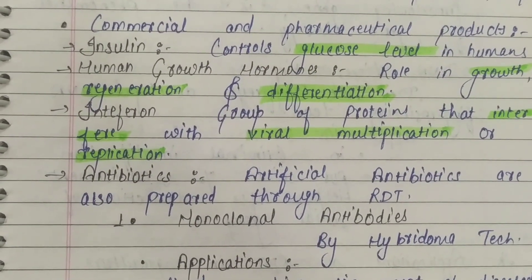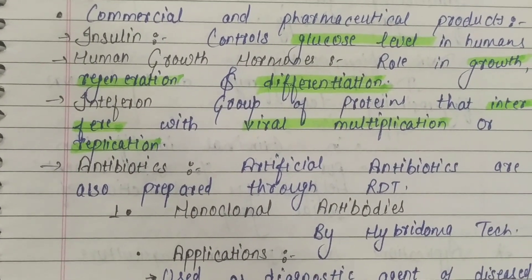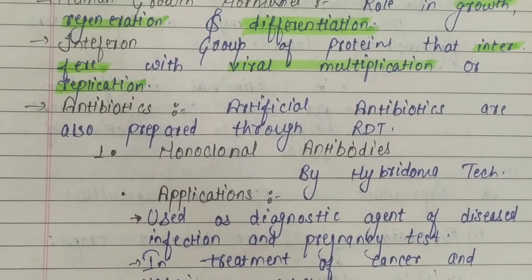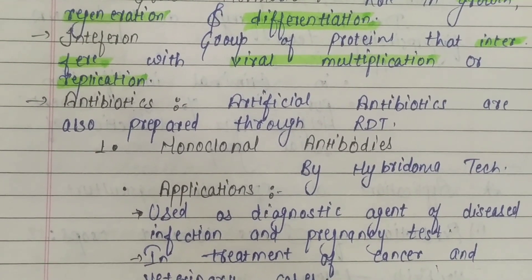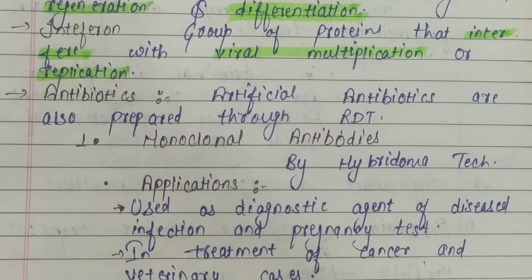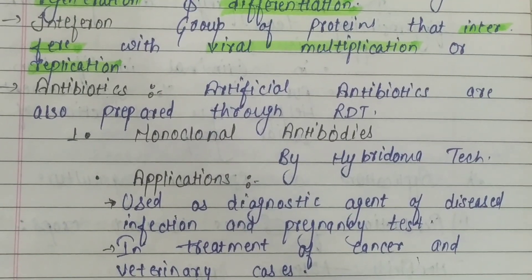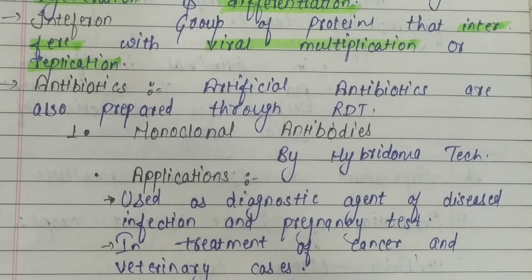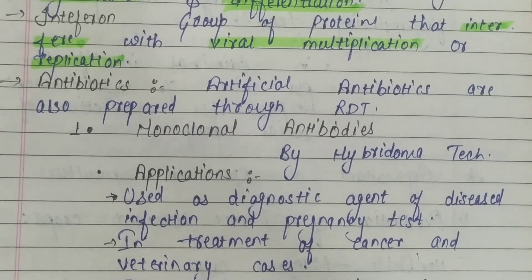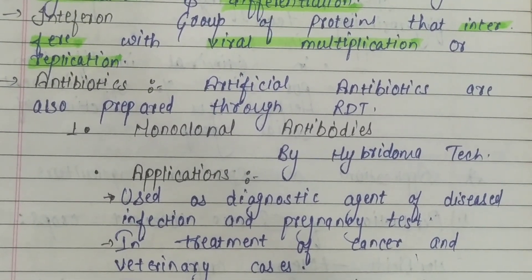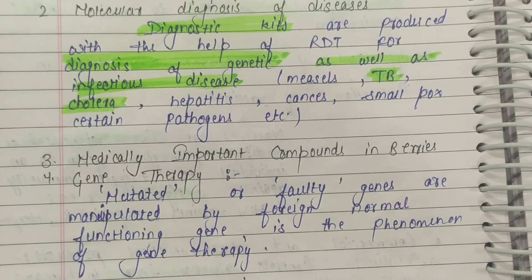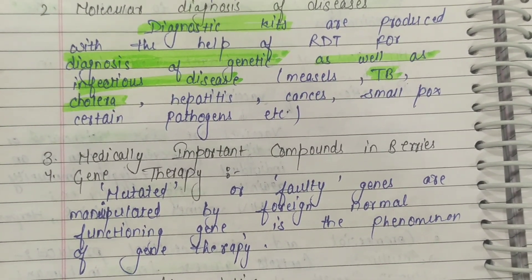Antibodies are also produced with the help of RDT. Monoclonal antibodies are prepared by a technique called hybridoma technology, in which recombinant DNA technology is applied.